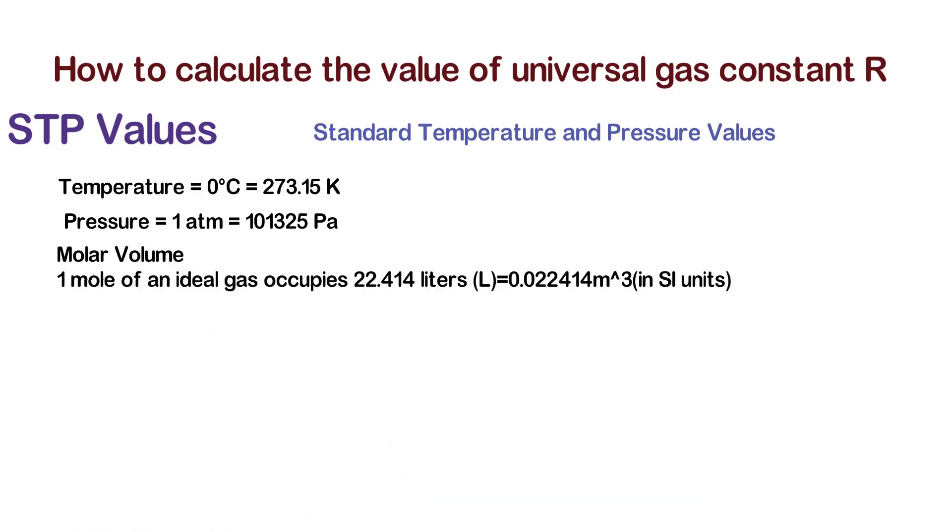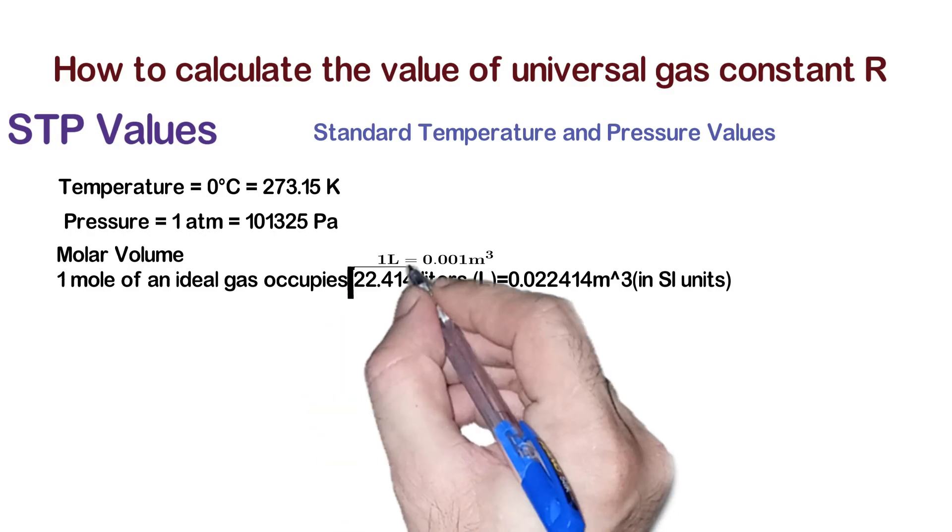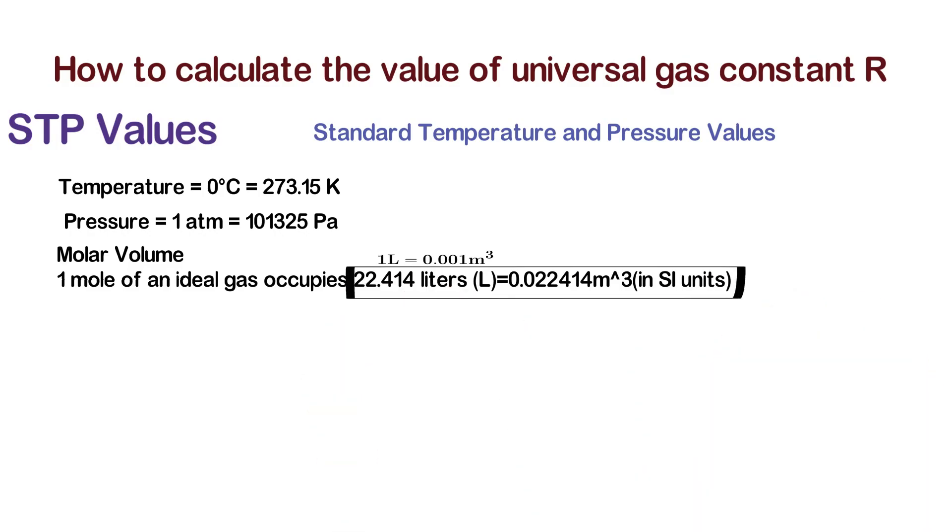The molar volume at STP is equal to 22.414 liters. If you convert this to cubic meters, you multiply by 0.001 m³, because one liter equals 0.001 m³. Multiplying this, we get 0.022414 m³ in SI units.